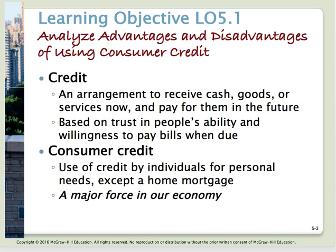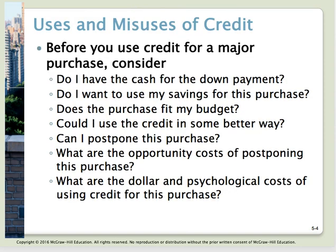Learning objective number one: analyze advantages and disadvantages of using consumer credit. Credit is an arrangement to receive cash, goods, or services now and pay for them in the future. Consumer credit is the use of credit for personal needs of individuals and families — it's a major force in our economy. When you use credit you want to make sure you have a valid reason, such as a medical emergency, an immediate need for a car, or protecting against rising prices.